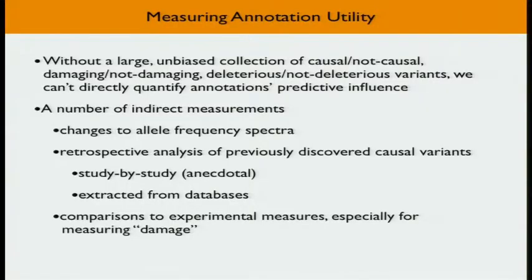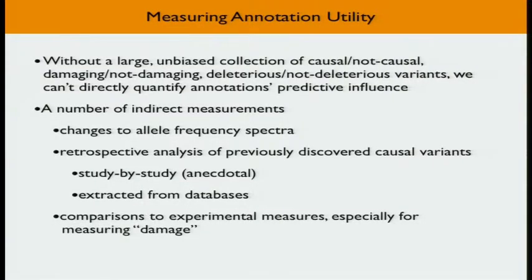How do we really know that annotations are useful? The short answer is we won't get clear quantitative unbiased estimates in the way we'd like, because we'd need large collections of truly causal and non-causal variants to quantify what properties differentiate them. Instead, we use indirect ways to measure the utility of annotations: changes in allele frequency — if you can predict deleterious variants, they should have lower frequency due to selection — retrospective analysis of previously known variants from databases, and comparisons to experimental measures of function, especially for predicting damage.